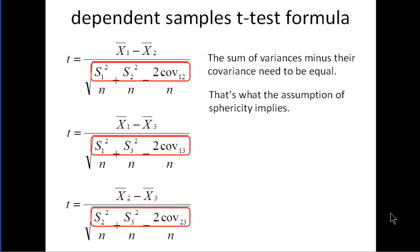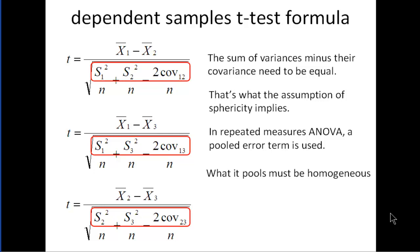And that's actually the assumption of sphericity. That these three denominator terms within the dependent sample t-test, they have to be equal to each other. That's what the sphericity assumption applies. And the repeated measures ANOVA uses a pooled error term. And the pooled error term has to be homogenous, or at least what it's pooling together has to be homogenous. And you might call this the homogeneity of sum of variances minus covariance assumption, instead of saying the assumption of sphericity, which is almost inexplicable in terms of just looking at the word. But if you say something like homogeneity of sum of variances...